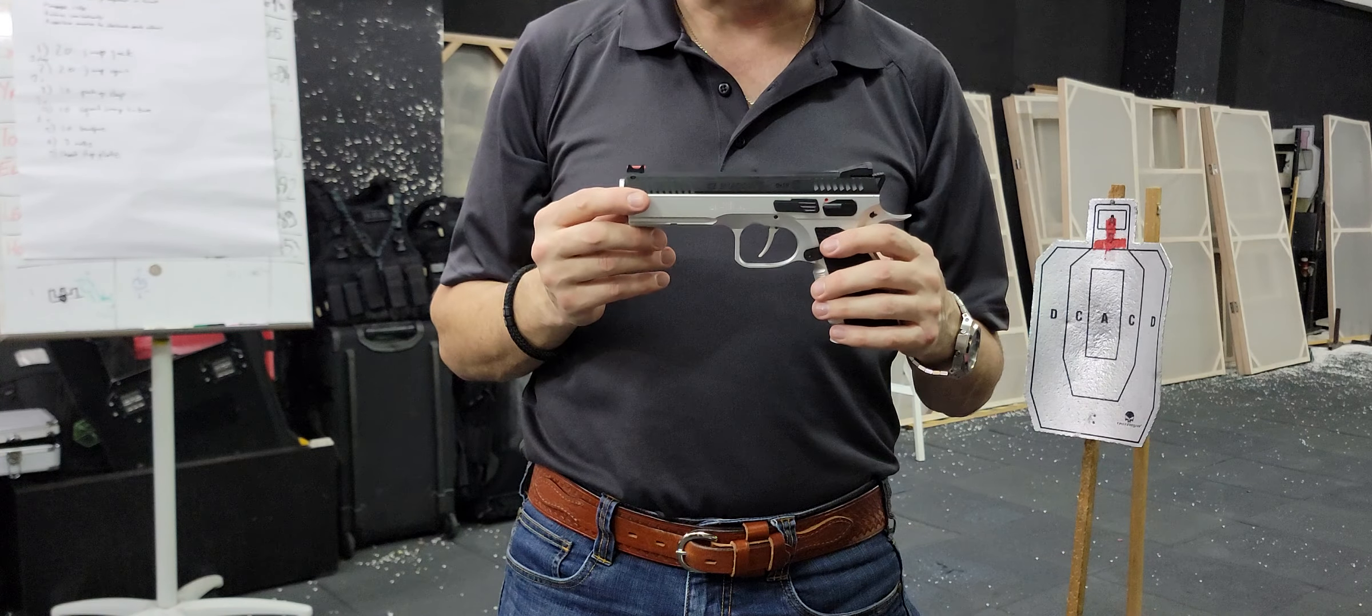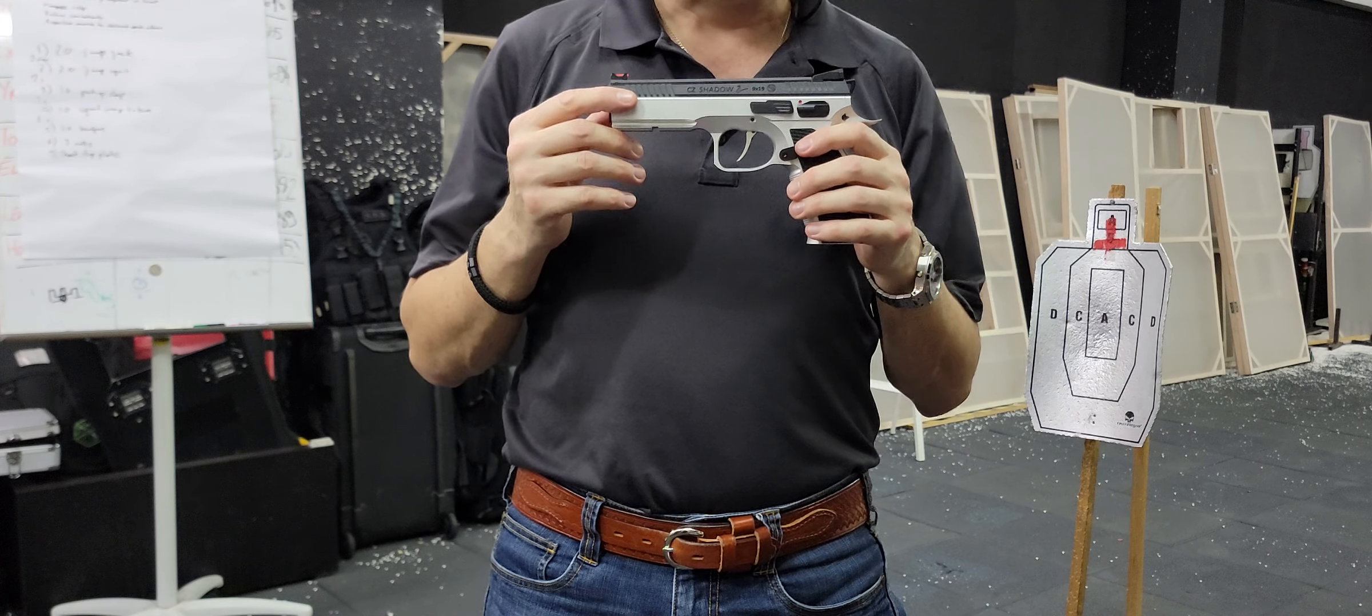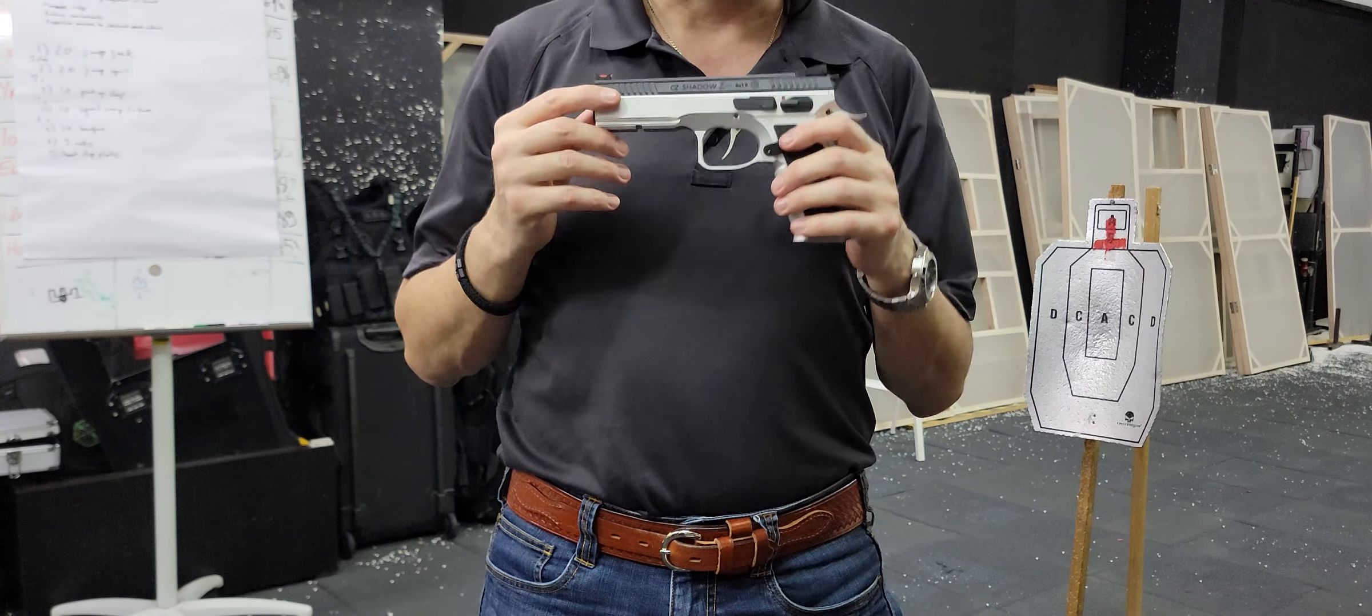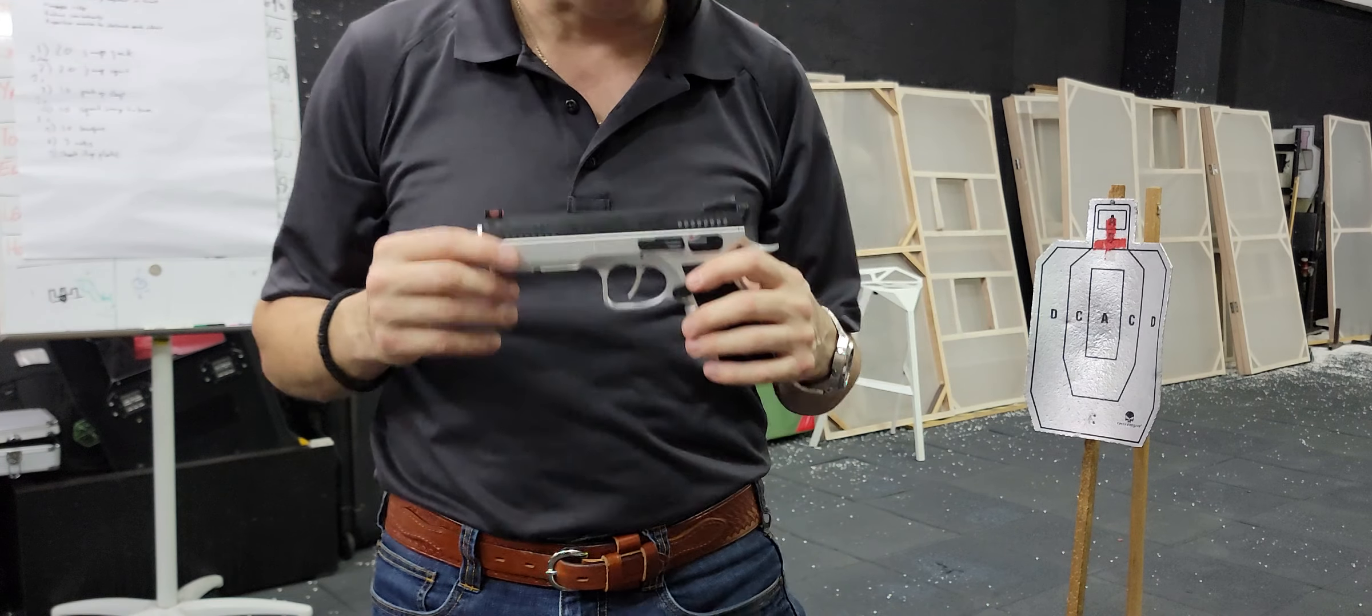So the first test I want to do tonight is just a mag dump, just to show that the guns can cycle, they can dump a whole magazine and lock back. So we're going to start with the black one first.